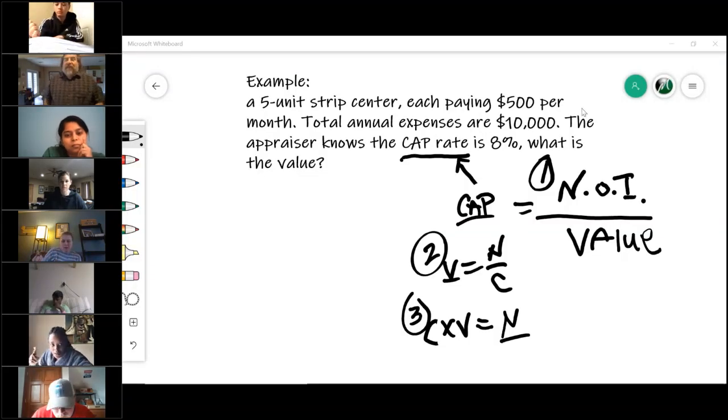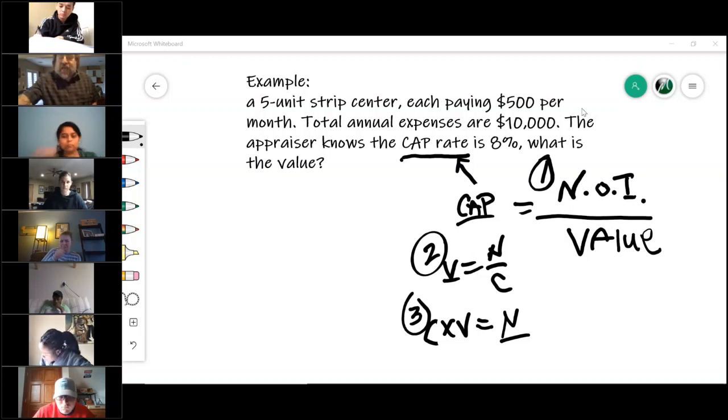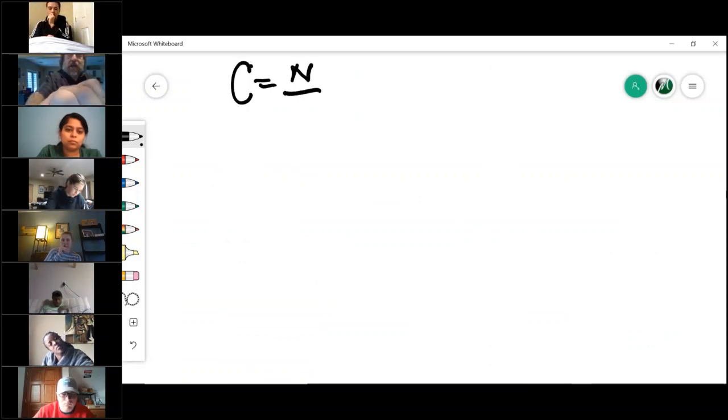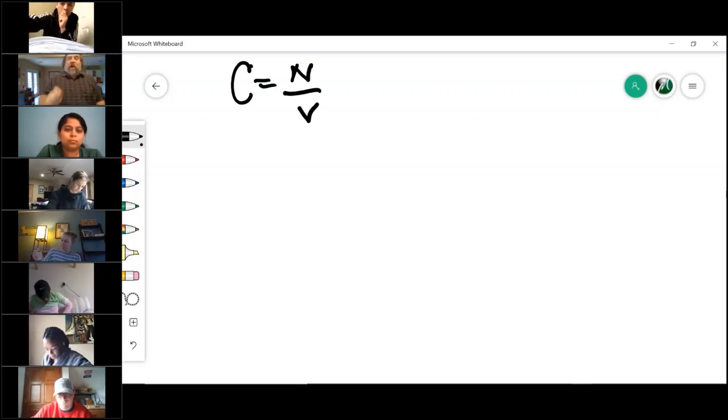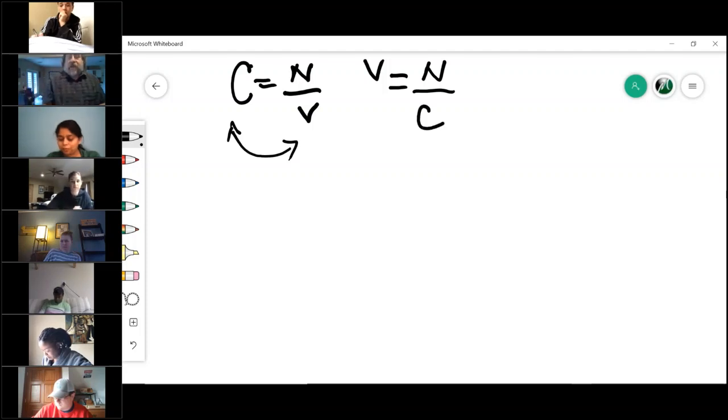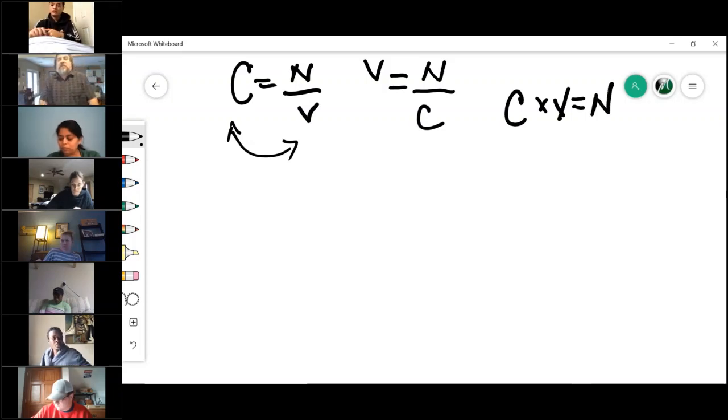Yes ma'am, could you put the paper again so I could see the third one? Okay, so what you have is the cap rate equals the NOI over the value. You also can flip those. The value equals the NOI over the cap rate. And the third one would be the cap rate times the value equals the NOI. If you don't know how to do this algebraically, I had a guy show me this, how he remembered it.